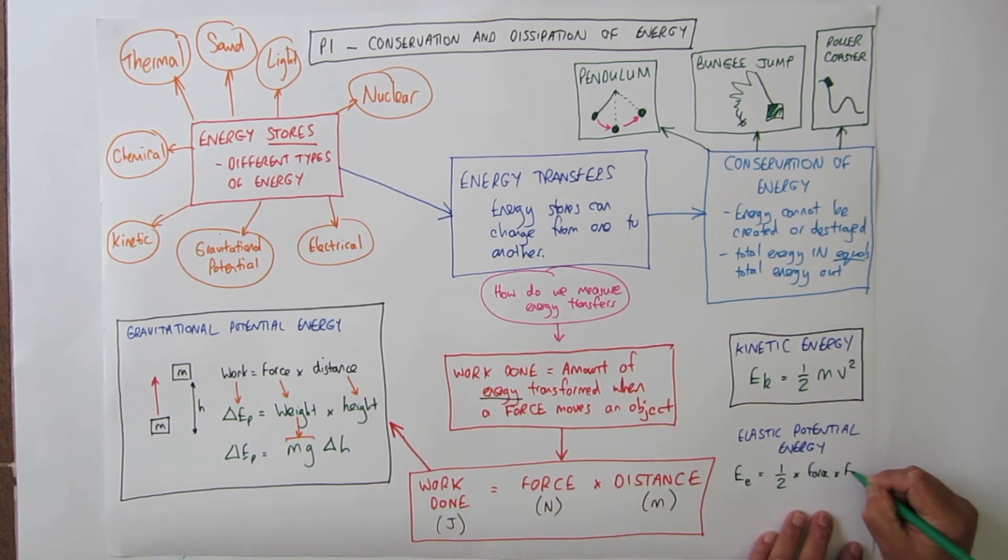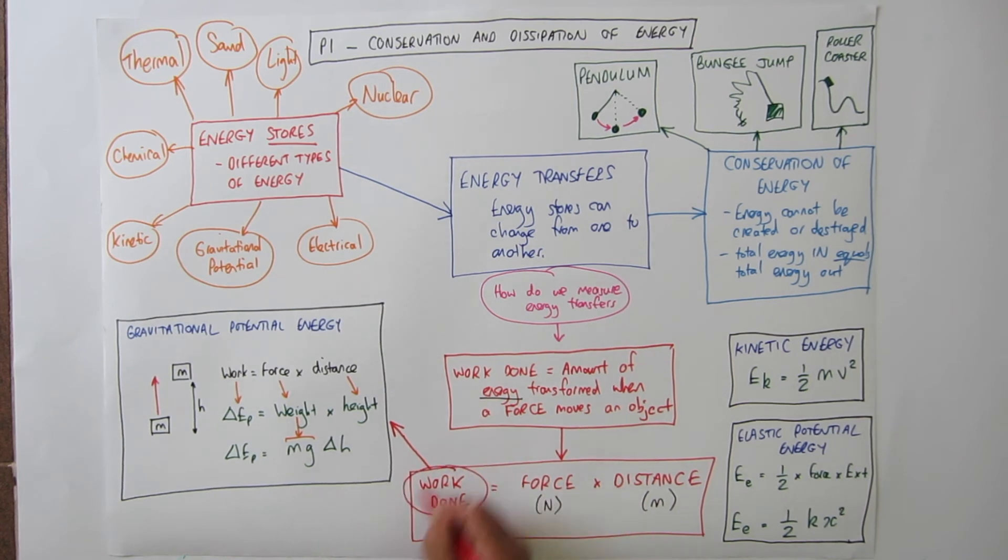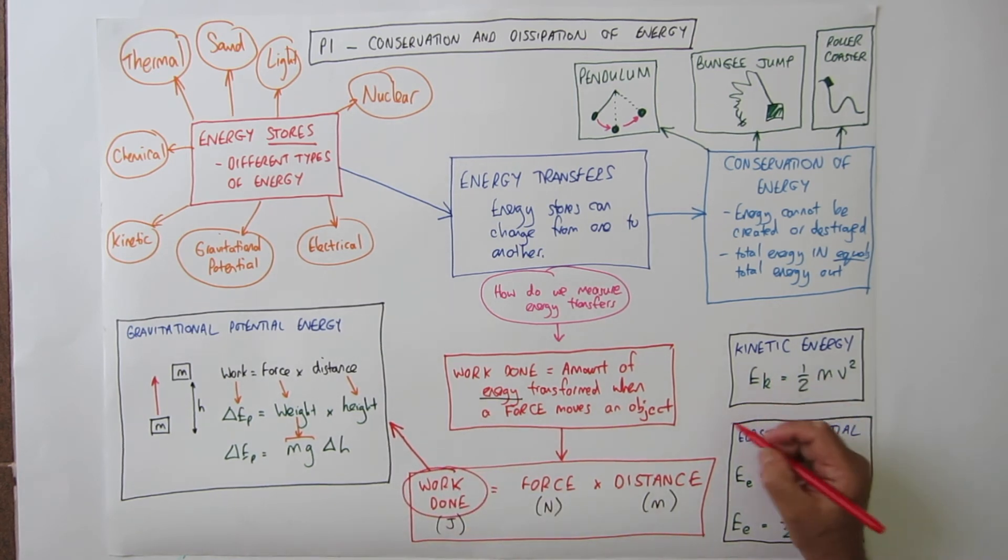And the third equation is one for elastic potential energy. Where elastic potential energy is a half times force times extension. Or a half K X squared. Where K is the spring constant. So three equations which all come from the work done equation.